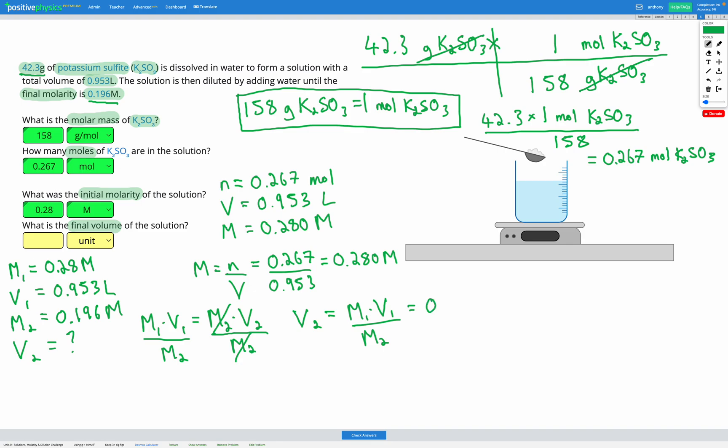Let's put in our numbers. Our initial molarity was 0.28 multiplied by our initial volume, 0.953, divided by our final molarity, 0.196. If we put that all into our calculator, we get a final volume of 1.36 liters, which we can fill in to our answer box. 1.36 liters. Awesome, okay.